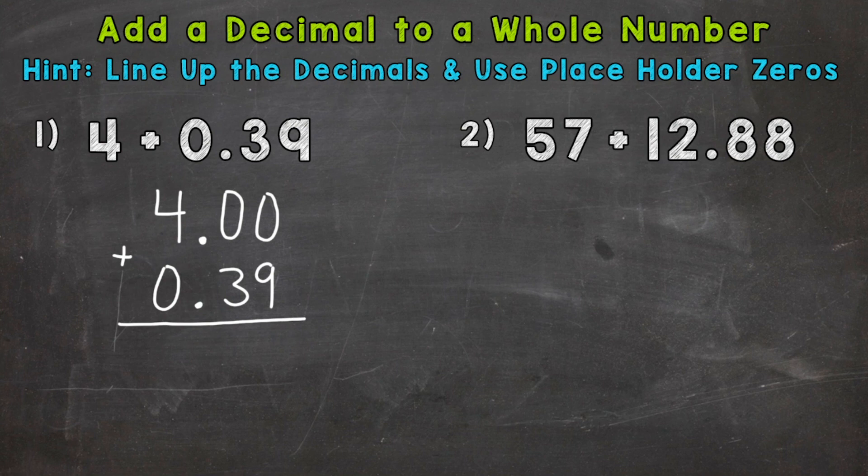So now we just add. So zero plus nine, nine. Zero plus three is three. The decimal comes straight down. It's lined up throughout the whole problem. And four plus zero is four. So our final answer is four and 39 hundredths.